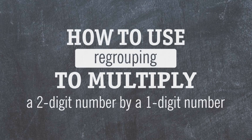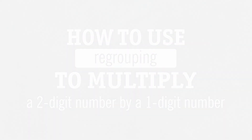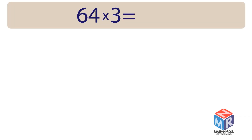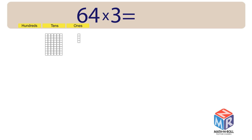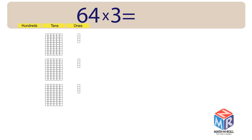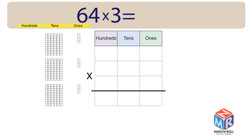How to use regrouping to multiply a two-digit number by a one-digit number. Let's look at 64 times 3. Let's draw it out — 64 has six tens and four ones. 64 multiplied by 3.